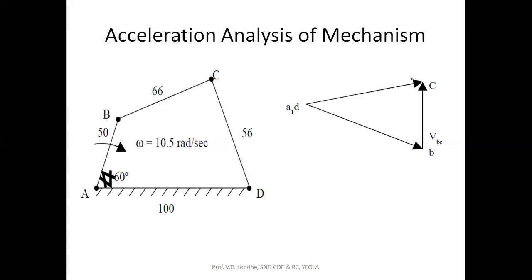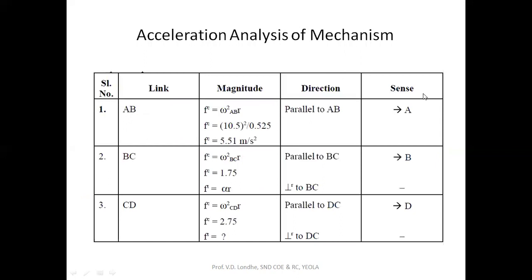Here is how we are plotting this velocity polygon. Initially, from the configuration diagram, you have to first locate the fixed points — here they are A and D. We represent these as small letters in the velocity polygon, while capital letters are used in the configuration diagram. Then the velocity of link AB will be perpendicular to this link length AB. The velocity component for link BC will be perpendicular to BC, and CD will be drawn likewise. In this way, you will get point C, completing the velocity polygon.